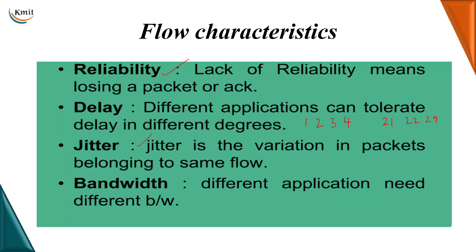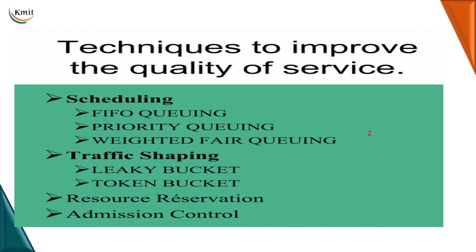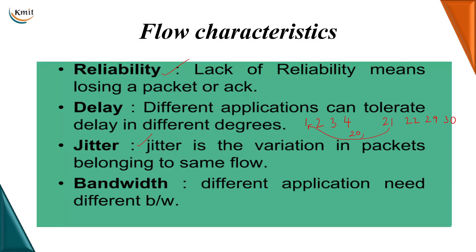29 and 30 for example. So you see the difference between the packet arrival time is 21 minus 1 = 20. Second packet arrival time 22 minus 2 = 20, and third packet arrival time 29 minus 3, that is 26. So this variation in the packet arrival time creates jitter. We have to see to it that the variation in the packet arrival time is uniform, not different.